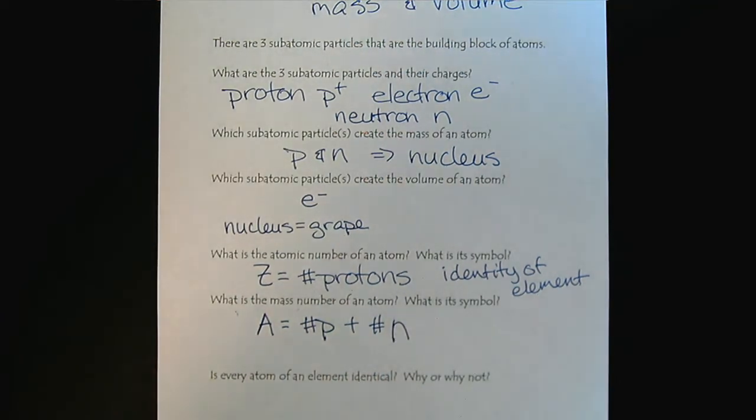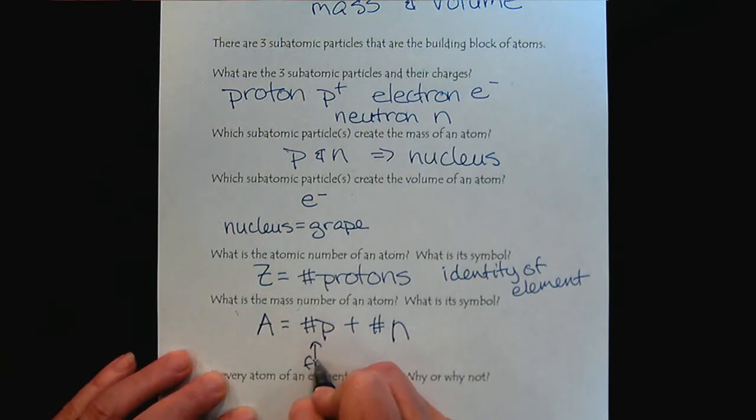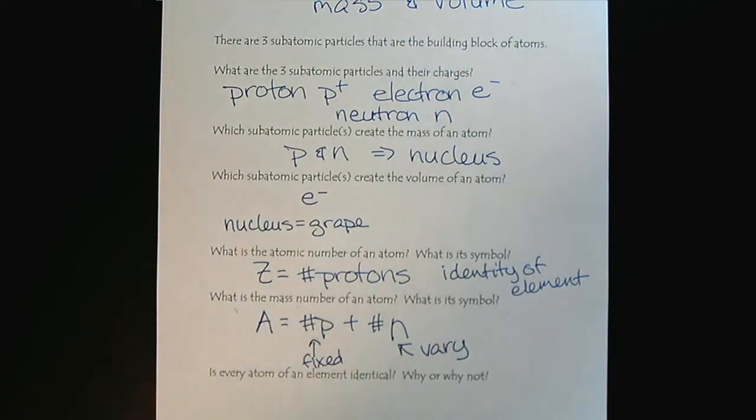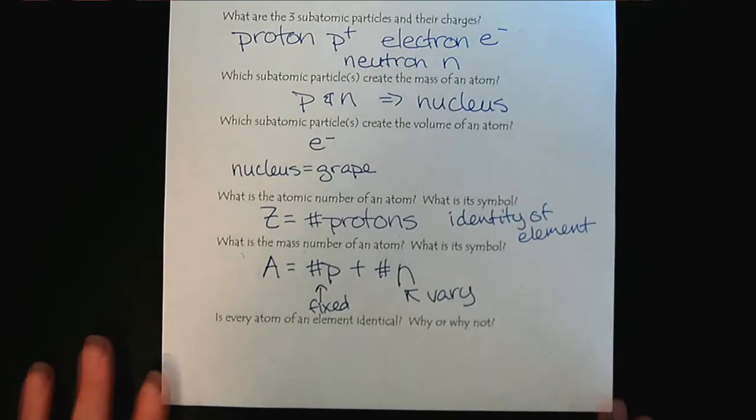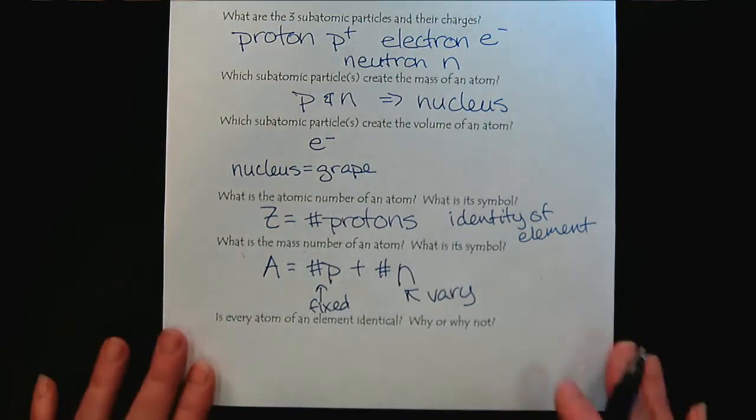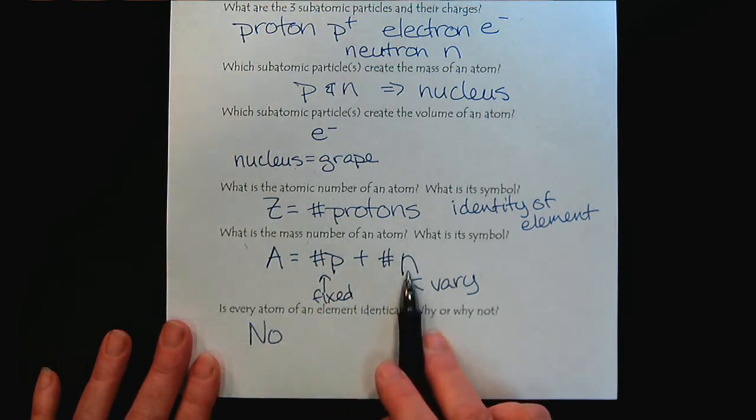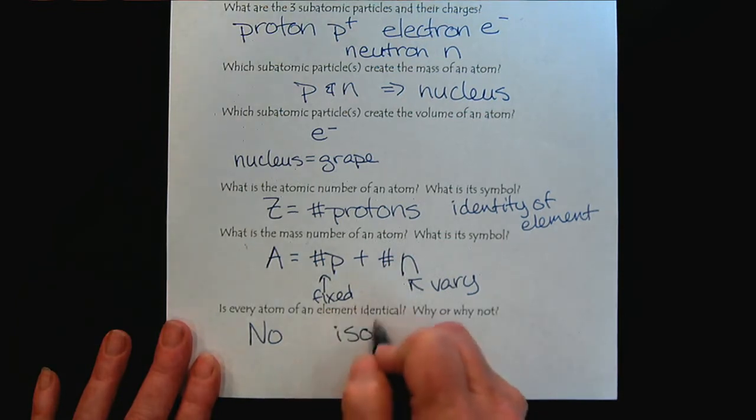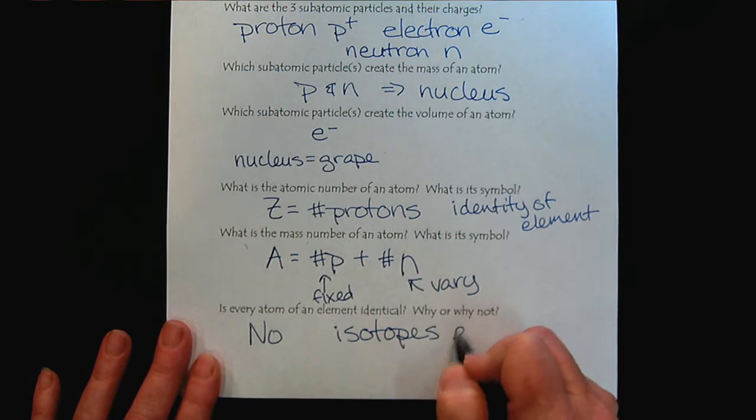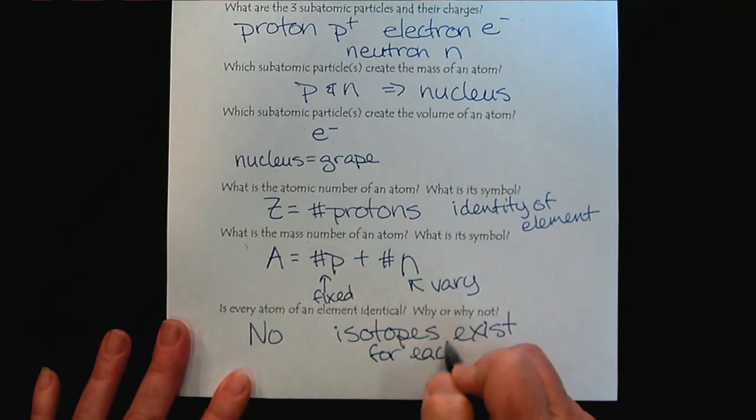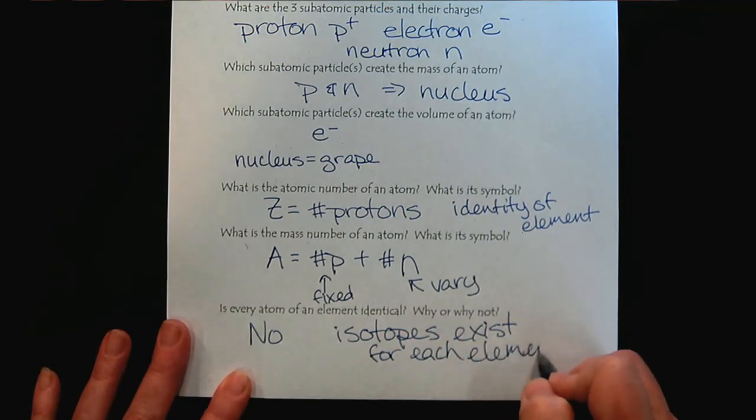For any given element, the number of protons is fixed. However, the number of neutrons can vary. And so if we are asked, is every atom of an element identical, the answer would be no. So when we have different atoms of an element with a different number of neutrons, we describe that as an isotope. So isotopes exist for each element.